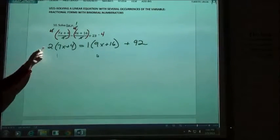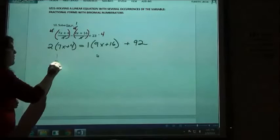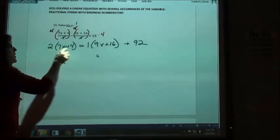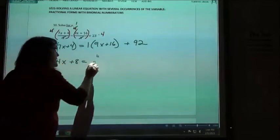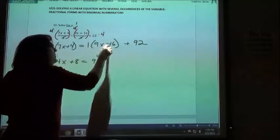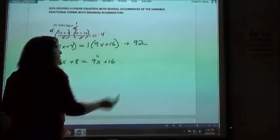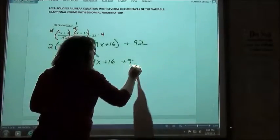So using my distributive property, 2 times 7x would be 14x, 2 times 4 is plus 8, equals 1 times 9x is 9x, 1 times 16 is 16, and then I have that plus 92 on the end.